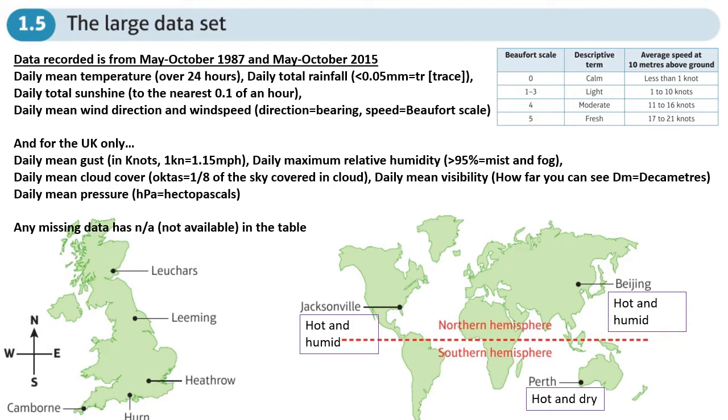This is section five on data collection, chapter one from the stats and mechanics year one book. It's on the large data set. Now this is a section that just gets neglected - students don't bother with it, probably don't understand it. They look at the spreadsheet and think there's loads of data here, it doesn't make any sense. There's a huge spreadsheet, don't know what's going on. So what we're going to do here is try and summarize what's going on in the large data set.